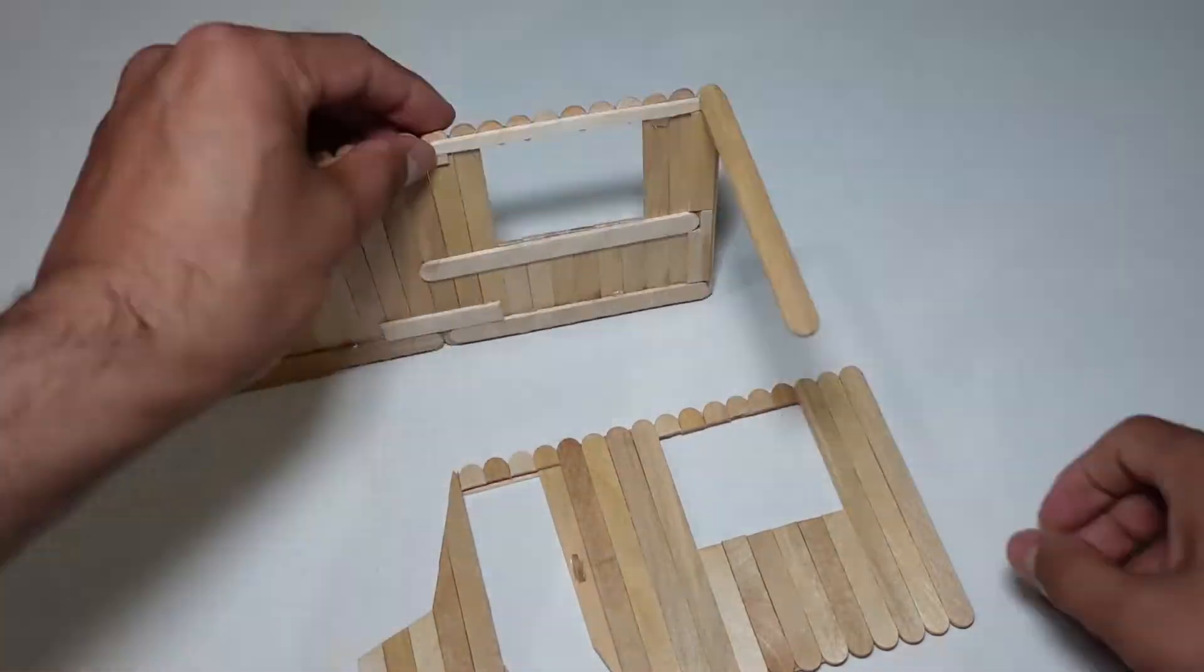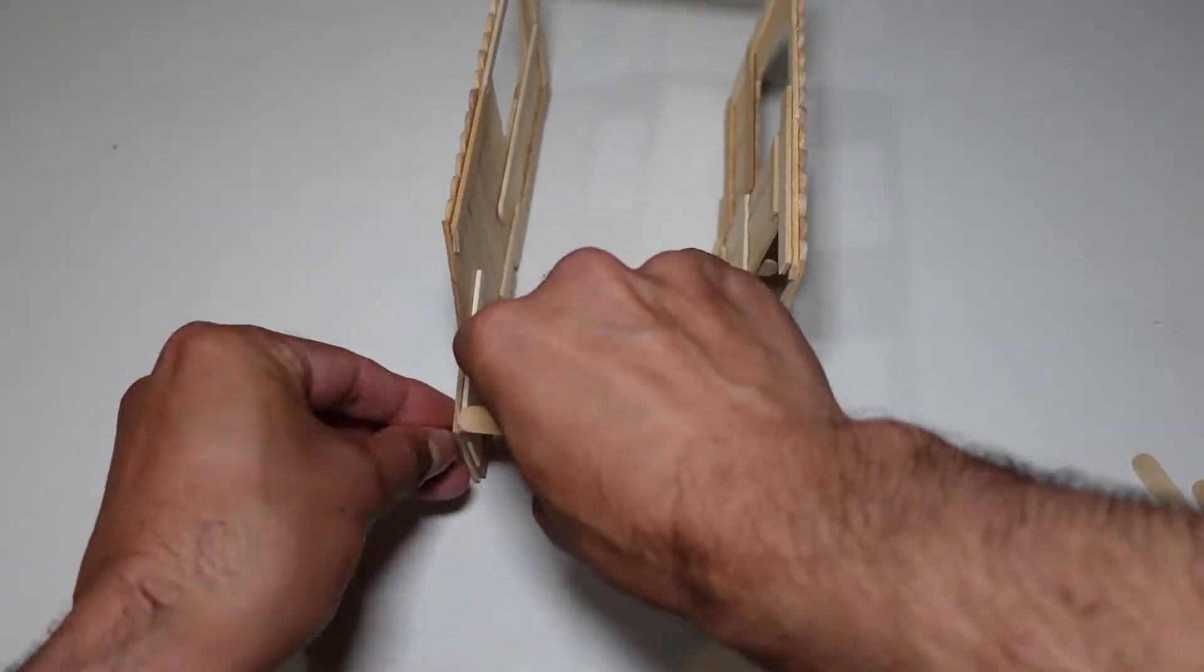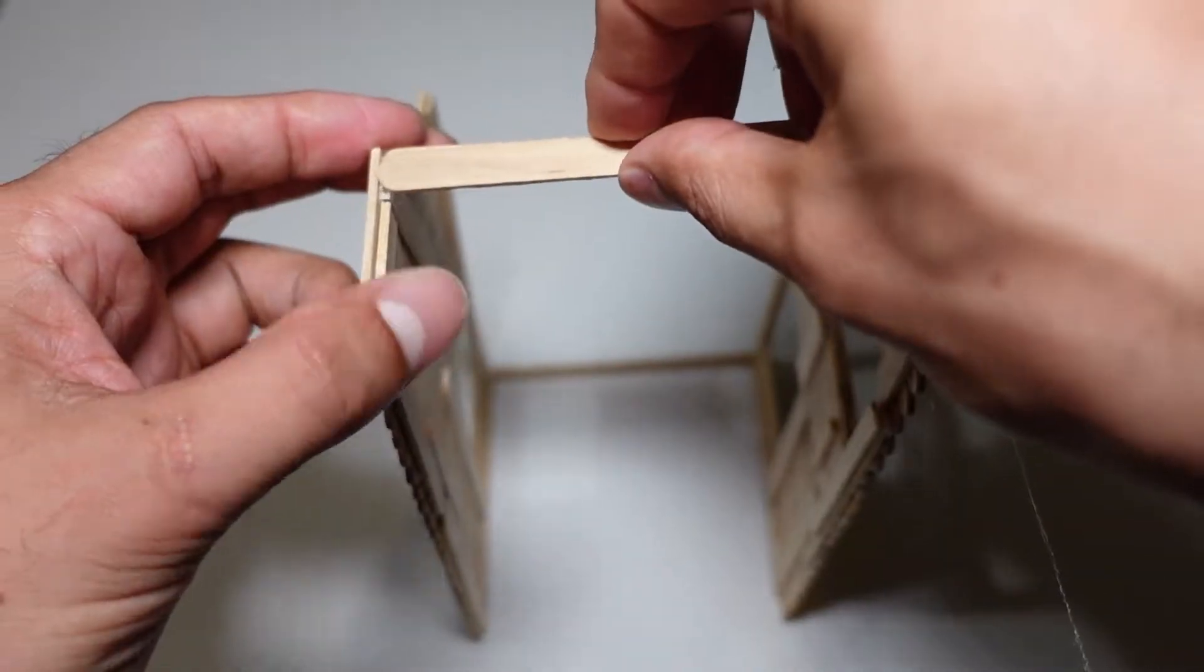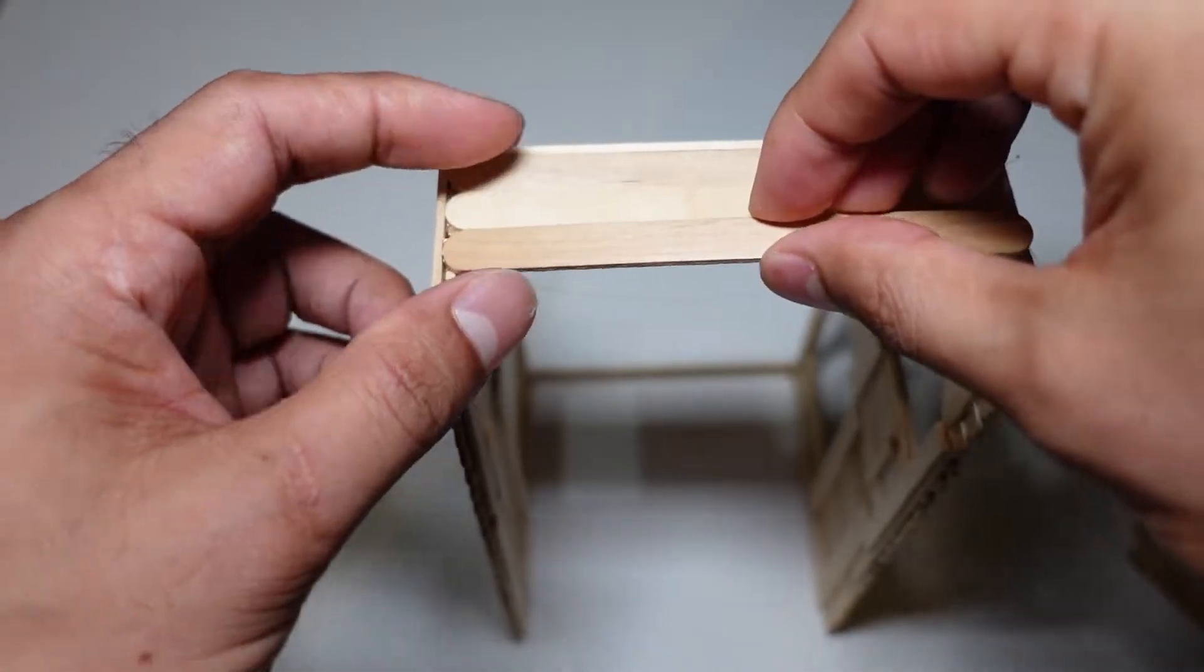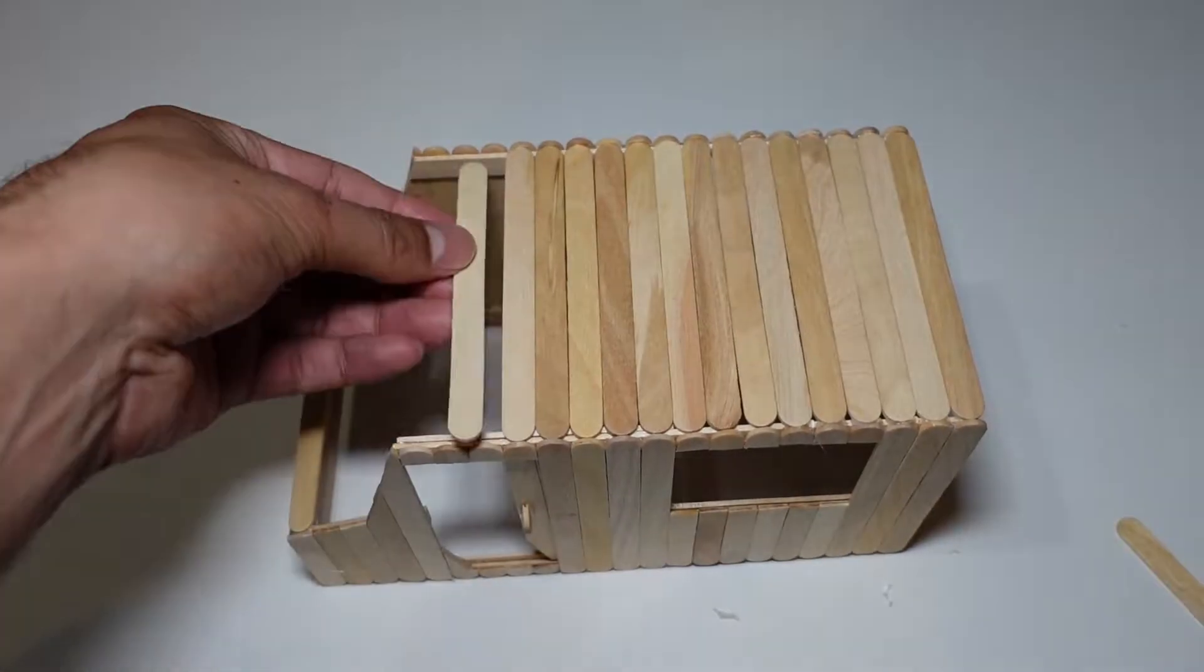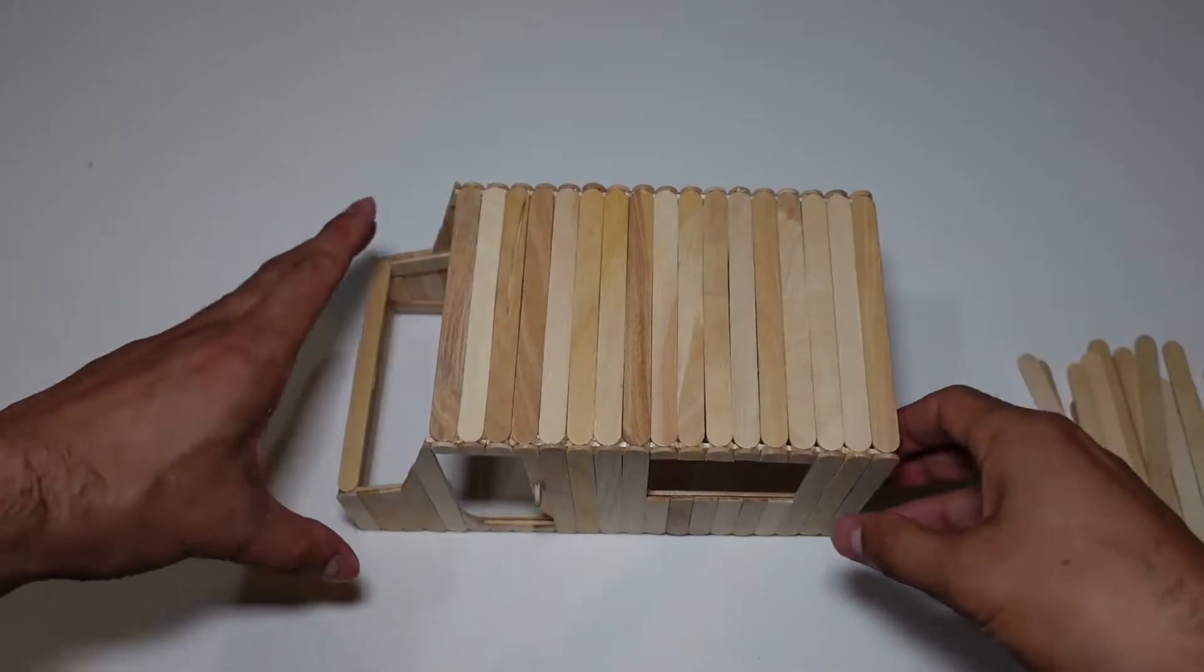Let's connect both sides using one popsicle stick. This will also be the width of the truck. Let's connect more sticks between both sides. I do it on the top of the truck and the bottom.